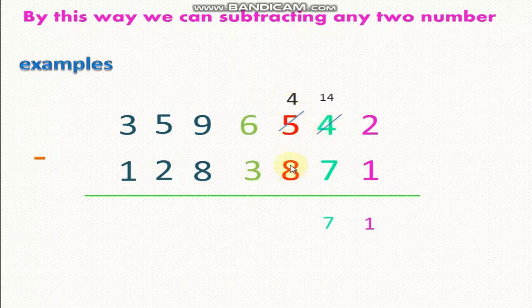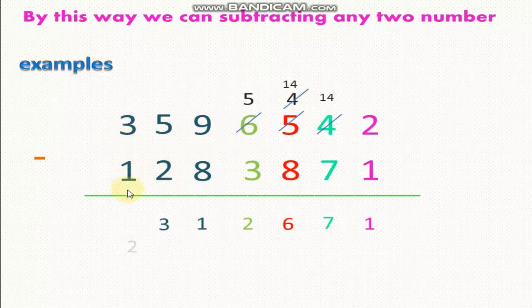4 minus 8. I can't take 8 from 4, so we'll borrow 1 from 6. 6 became number 5 and 4 became 14. 14 minus 8 equals 6. 5 minus 3 equals 2. 9 minus 8 equals 1. 5 minus 2 equals 3. 3 minus 1 equals 2.